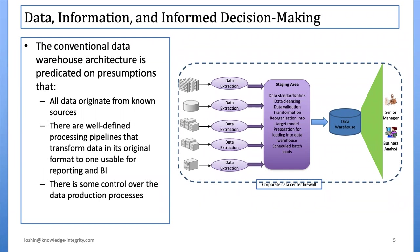That data warehouse is a single resource shared by different downstream consumers, and for the most part all these processes are managed by an IT team — the data warehouse guardians, you might say. So there are well-defined processing pipelines transforming data from the original formats to one usable format for reporting and business intelligence. There is some control exerted over those data production processes, and by limiting ourselves to a smaller domain of sources fed into the BI environment, we have some level of control.